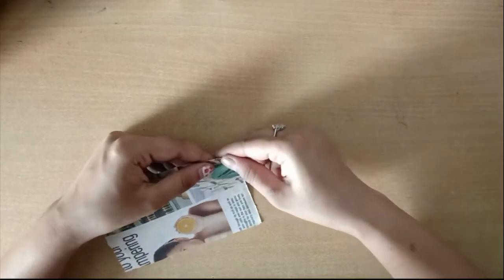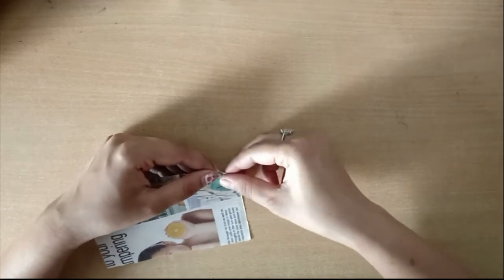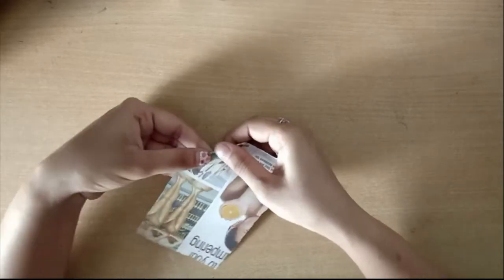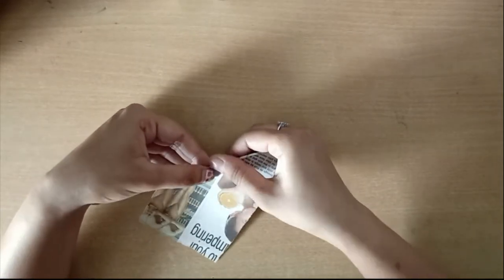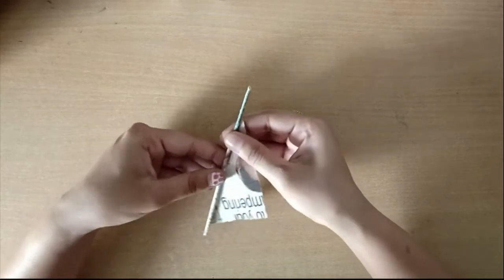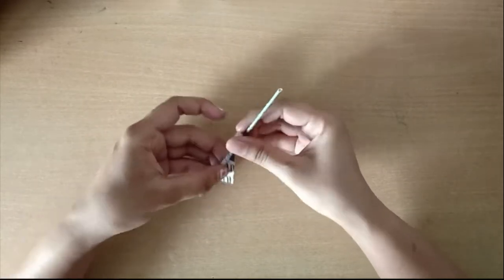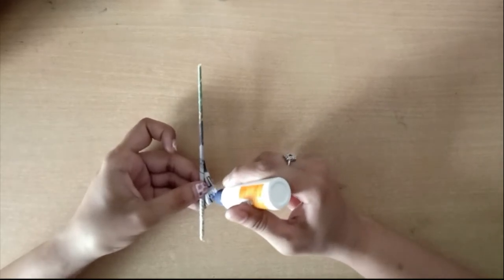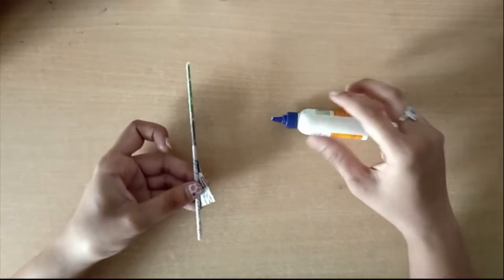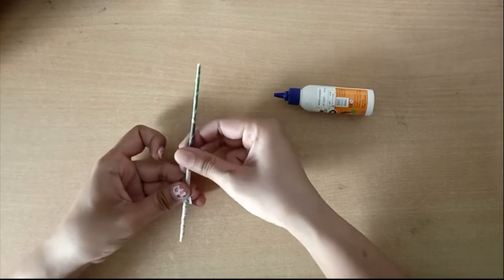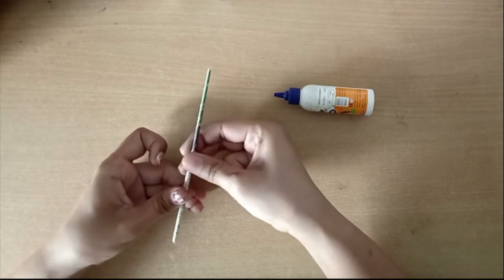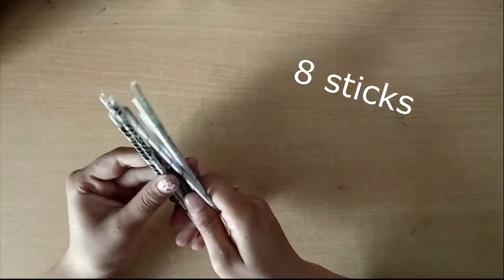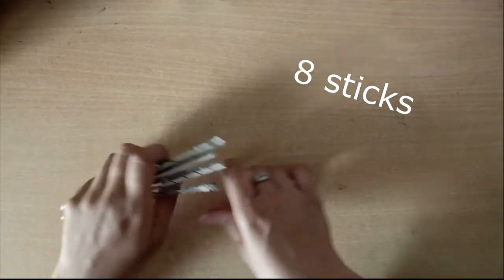Then we will start rolling it with a small part, and we will make paper tubes like this. After rolling it, we will secure the end with glue.